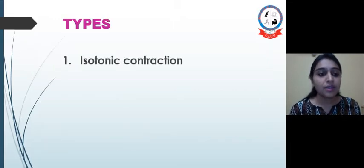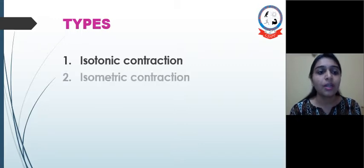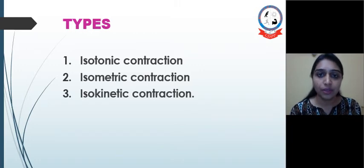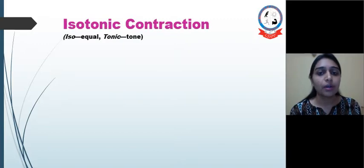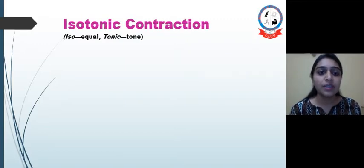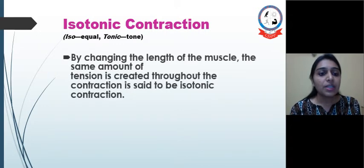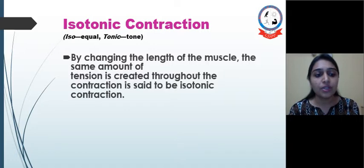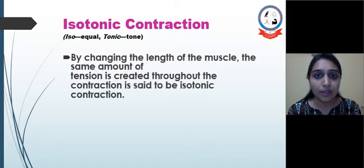The types of muscle work or muscle contraction are isotonic contraction, isometric contraction, and isokinetic contraction. Let's see each one in detail with examples. First is isotonic contraction. Iso means equal and tonic means tone. By changing the length of the muscle while the same amount of tension is created throughout the contraction, it is said to be isotonic contraction.